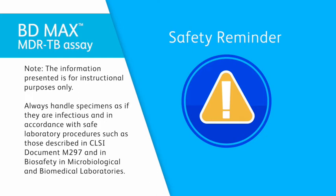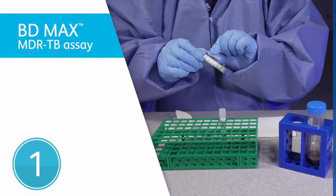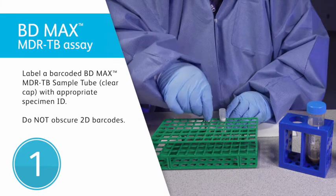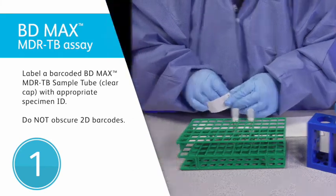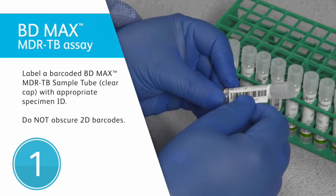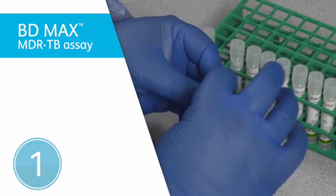To prepare the STR-treated sample, follow these steps. First, label a barcoded BD-MAX MDR-TB sample tube with the appropriate specimen identification. Be careful not to obscure, write, or label over the 2D barcode.